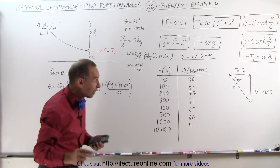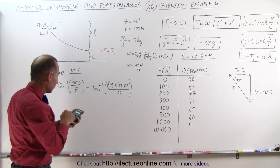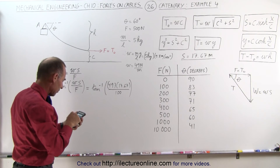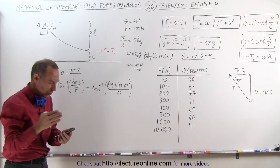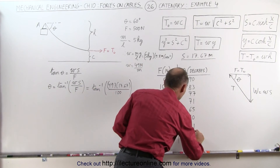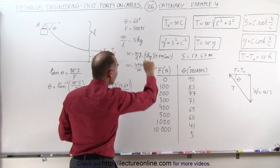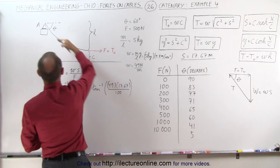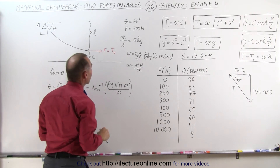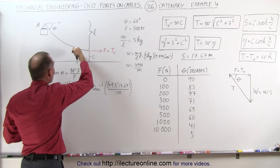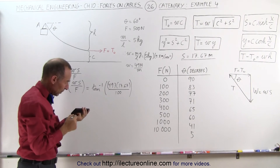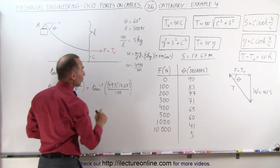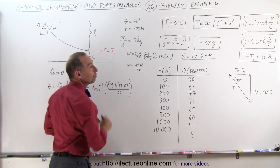What happens when we go to 10,000 newtons? That would be 49 times 17.67 divided by 10,000. Taking the inverse tangent, the angle is only 5 degrees. So when we pull with a force of 10,000 newtons — 20 times the original force of 500 newtons — the angle is only 5 degrees, and the only force acting downward is the weight of the cable. You can never really get the angle to be 0 degrees because that would ultimately require an infinite force.